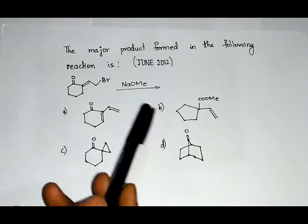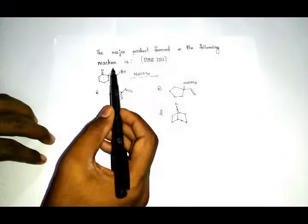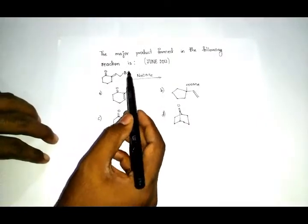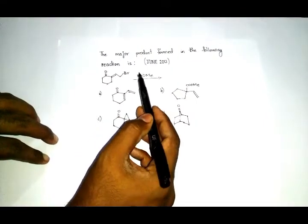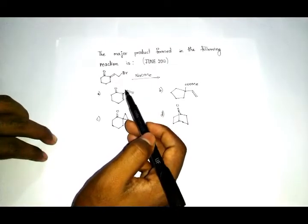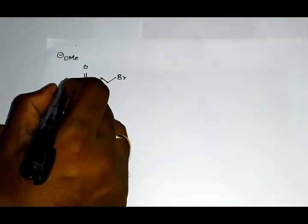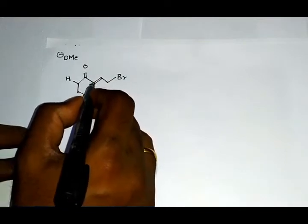The major product formed in the following reaction is... If you carefully observe the reactant and the reagent, it is a Favorskii rearrangement catalyzed by a base. There's an alpha hydrogen here, but there is no alpha hydrogen in this part.